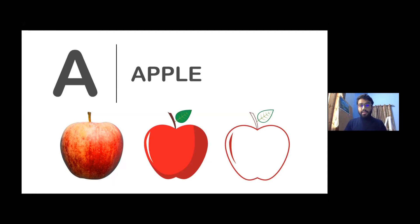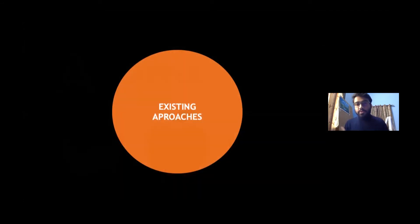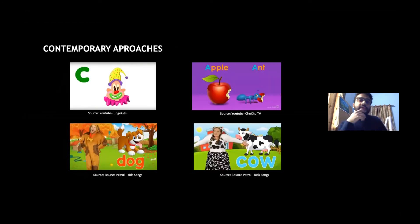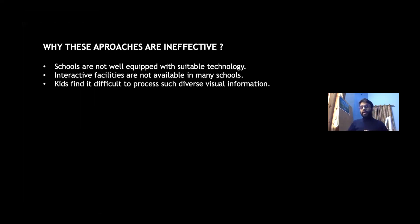The standard method for teaching the English alphabet involves a letter associated with a word, with a visual representation — a realistic picture, illustrative diagram, or a simple line drawing. Other existing approaches on YouTube try personifying objects or presenting letters with funny sounds. But these approaches didn't solve the problem effectively, because rural schools often lack suitable technology and interactive facilities, and kids find it very difficult to process such diverse visual information.